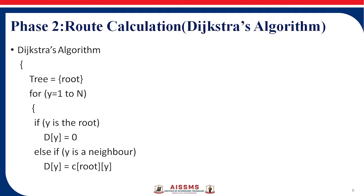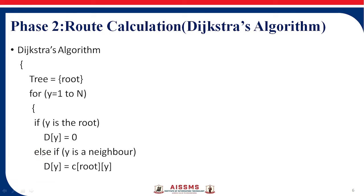We will see this algorithm line by line. First, we have to find out the least cost tree. In the initialize step, the root node will be the tree. Whenever we are choosing this, the root node will be the tree only.